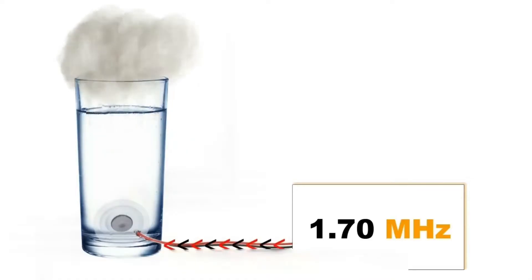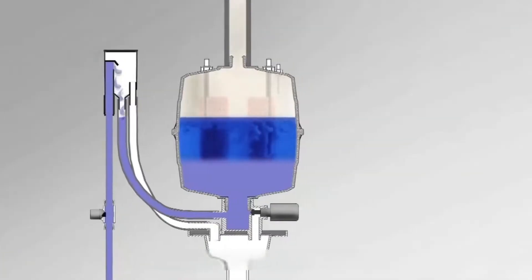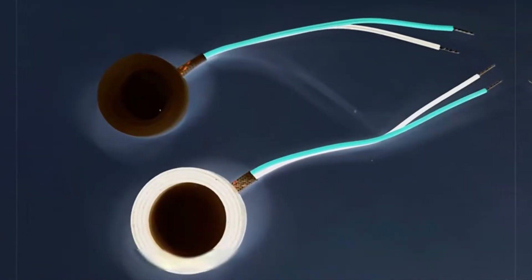Ultrasonic humidifier mainly uses high-frequency vibration to spray water mist into the air, to achieve the purpose of air humidification. While evaporative humidifiers use heated water to produce steam to achieve the purpose of humidifying the air.